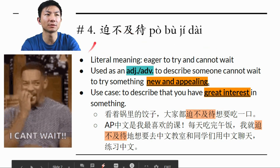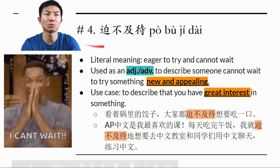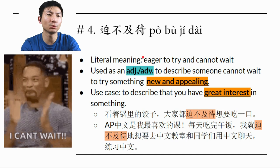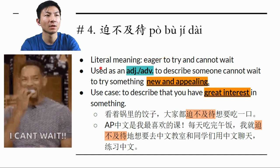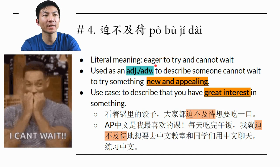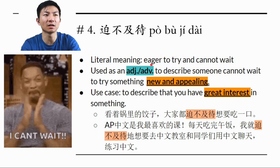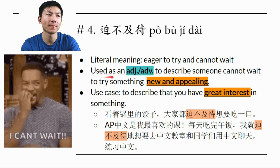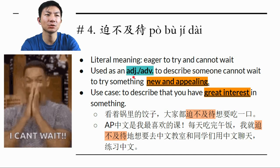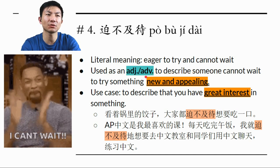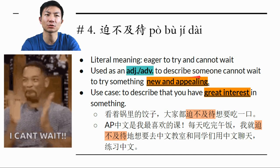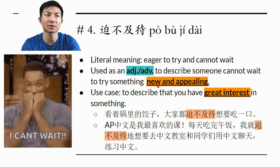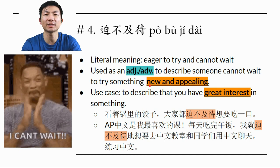The fourth 成语 is 破步寄带. The literal meaning is 'eager to try something and cannot wait.' It can be used as an adjective or adverb to describe someone who cannot wait to try something new and appealing.